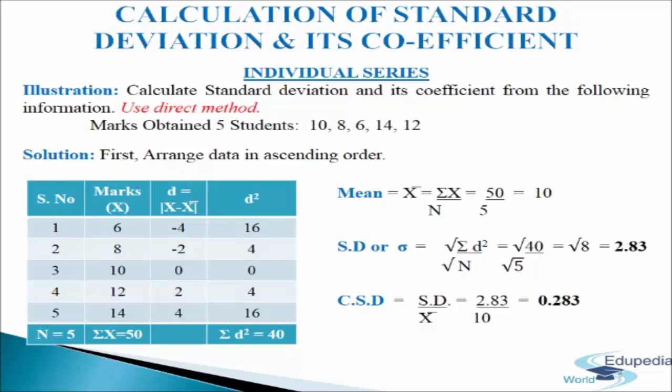We will understand individual series with the help of the following illustration. We have to calculate standard deviation and its coefficient using the direct method. Marks obtained by 5 students are 10, 8, 6, 14, and 12. We will make a table of 4 columns. The first column has serial numbers 1 to 5, so n = 5. In the second column we write marks denoted by x, arranged in ascending order: 6, 8, 10, 12, 14, giving σx = 50. We then calculate the mean.